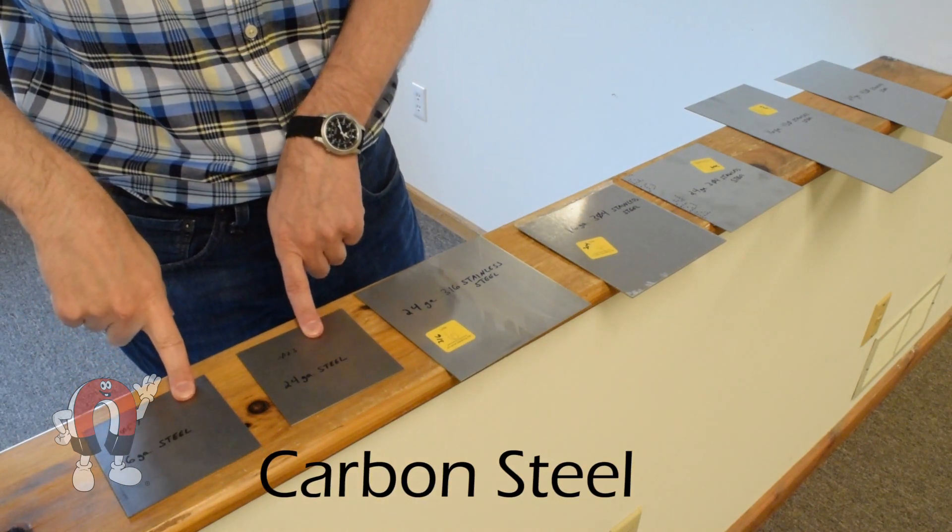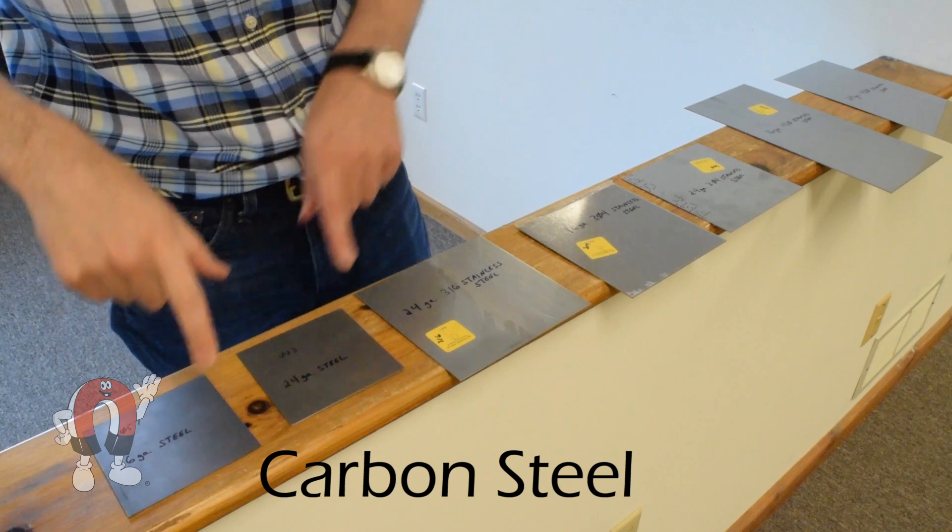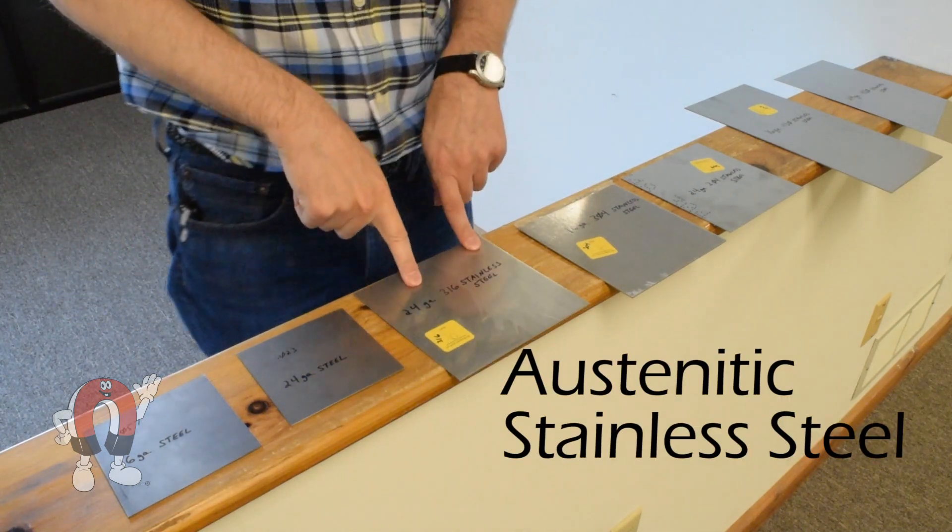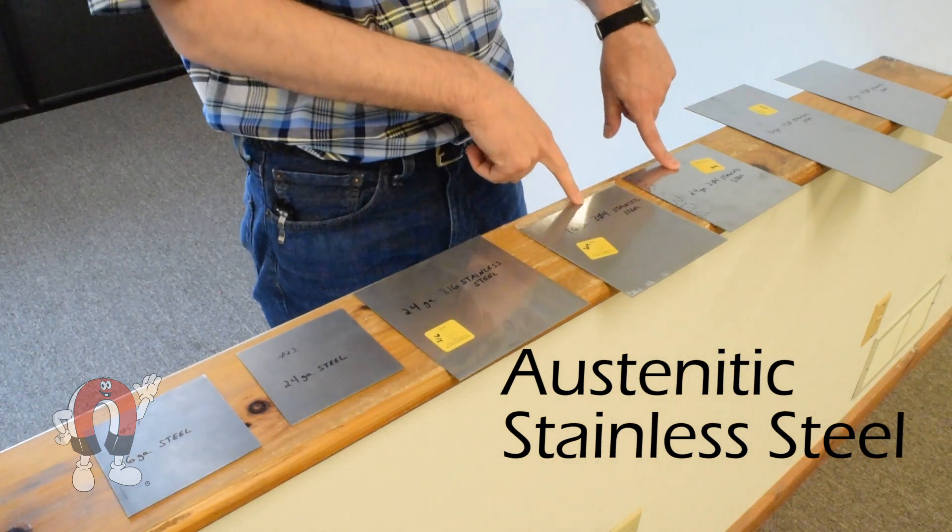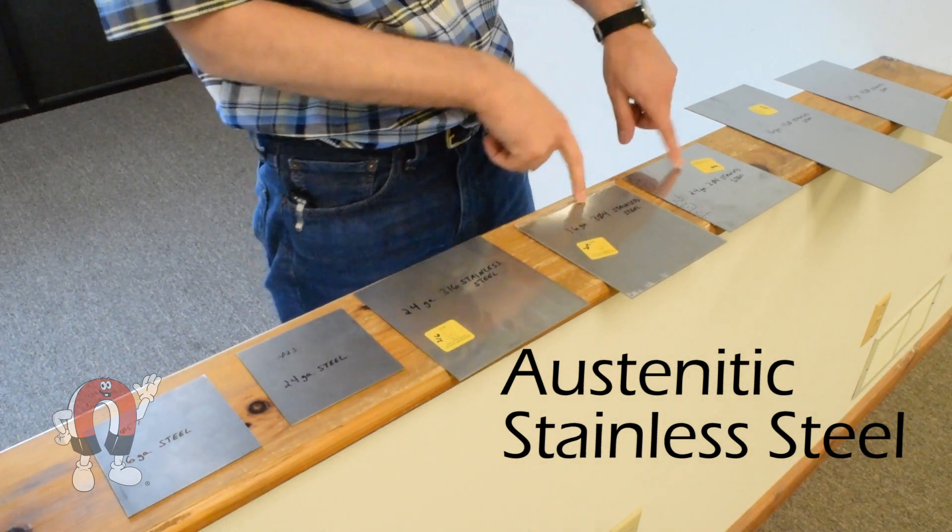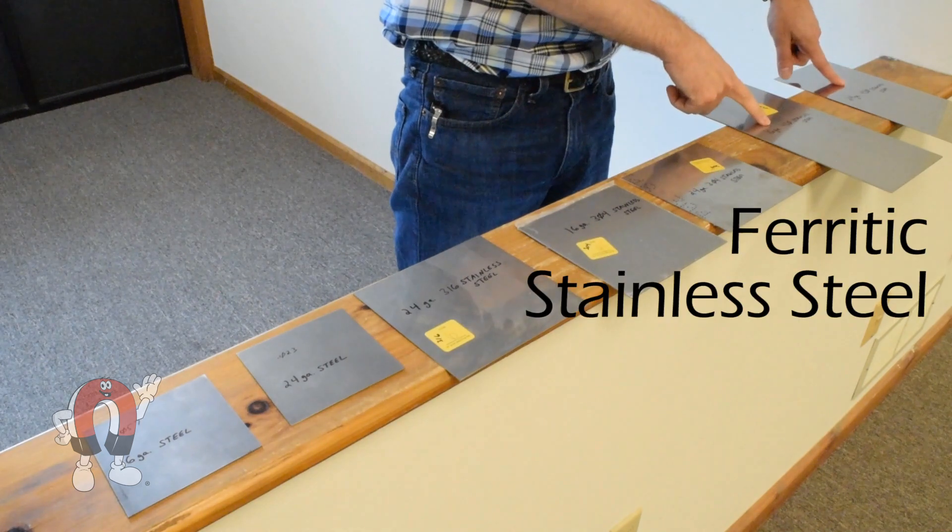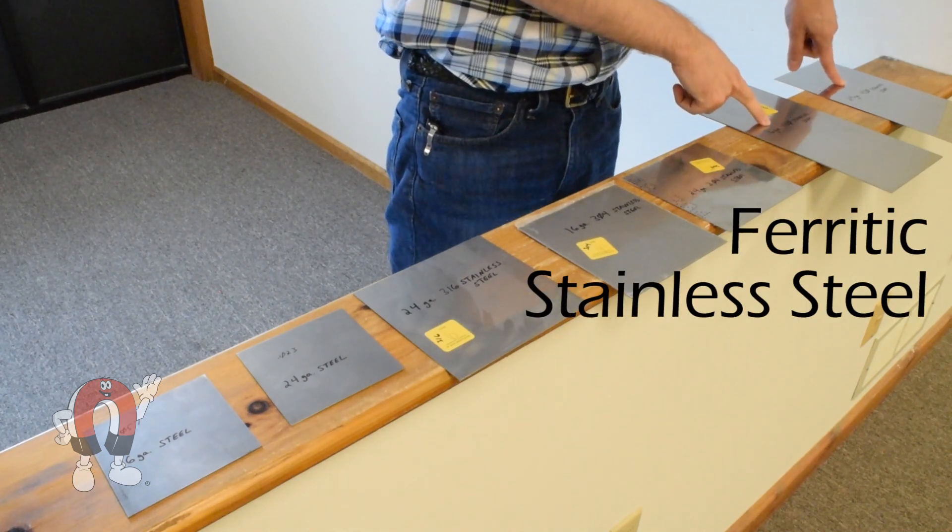Two thicknesses of regular low-carbon steel, one piece of 316 stainless steel, two thicknesses of 304 stainless steel, and two thicknesses of 430 stainless steel.